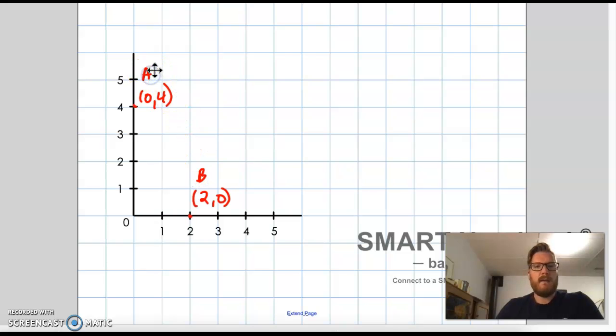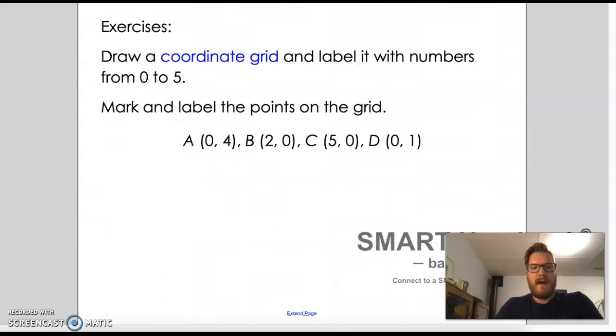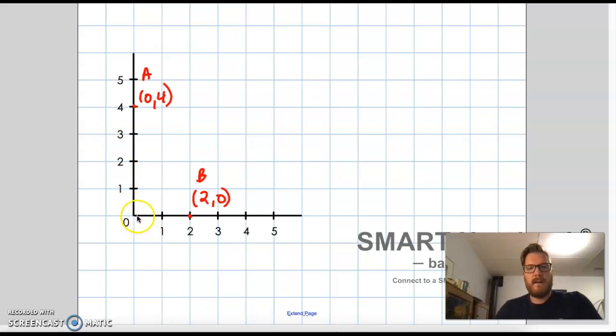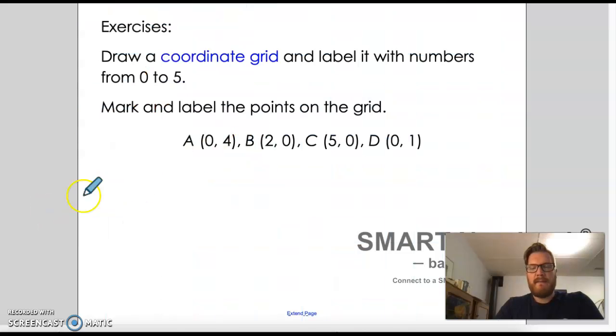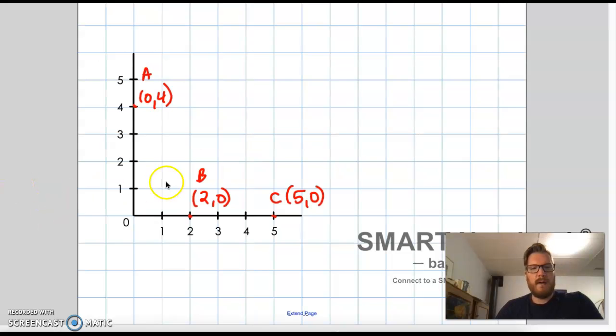C said five, zero. So we go five to the right and then up zero. That's C, five, zero. And then we have last one, which is zero, one. So again, we don't go over at all. And then we just go up one. So that's D, zero, one. So that's how we deal with ordered pairs where one of the numbers is zero.